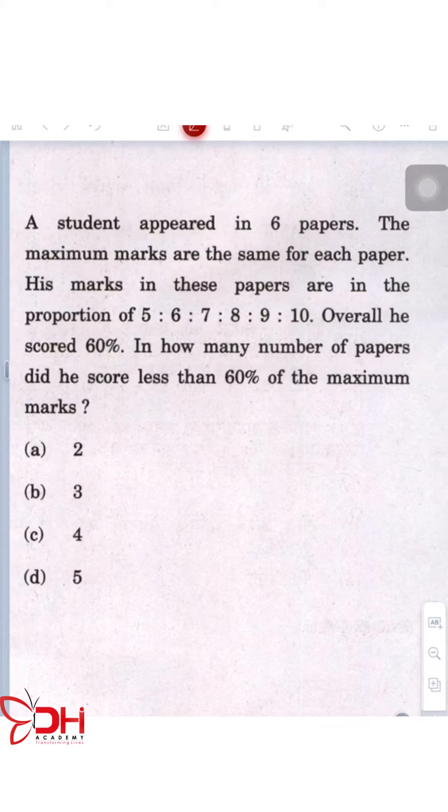So this is the proportion that they have given. Let's change that. In one paper, the first paper, he has scored 50 and second he has scored 60 and so on. So it's going to be 70 plus 80 plus 90 plus 100.